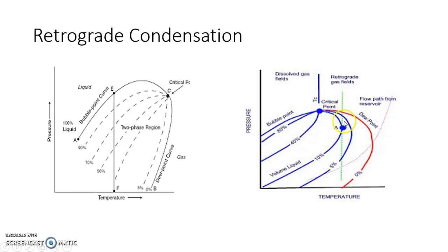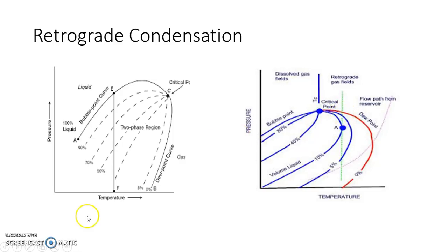Because of the retrograde phenomenon, we don't want to lose that gas because it is very precious. So while we remove the gas through one well, there is another well through which we continuously pressurize the system beneath the earth's crust so that the pressure doesn't fall below this point and the gas is not converted into liquid. This way, the maximum amount of gas can be withdrawn from the earth. Retrograde phenomenon is very useful in refinery operations.